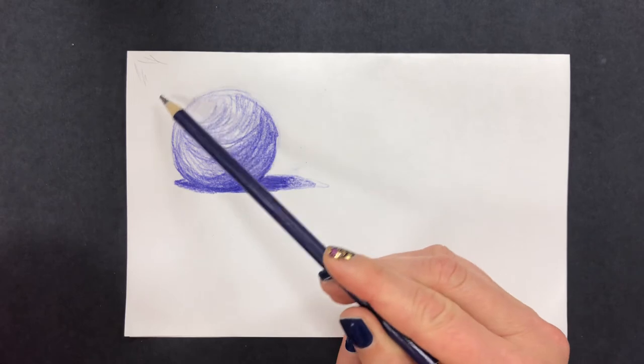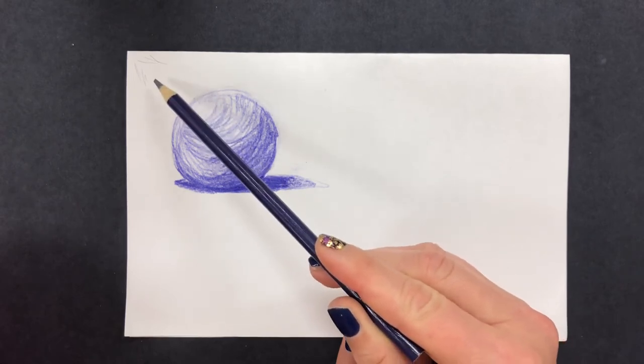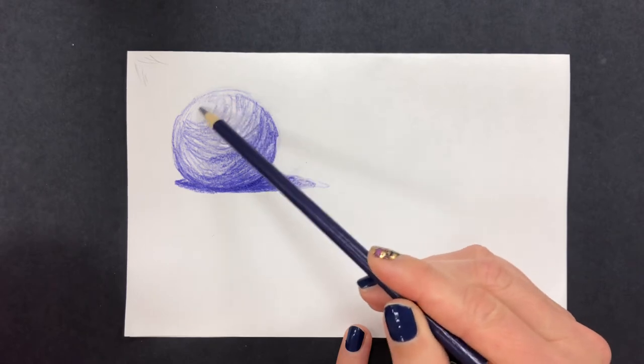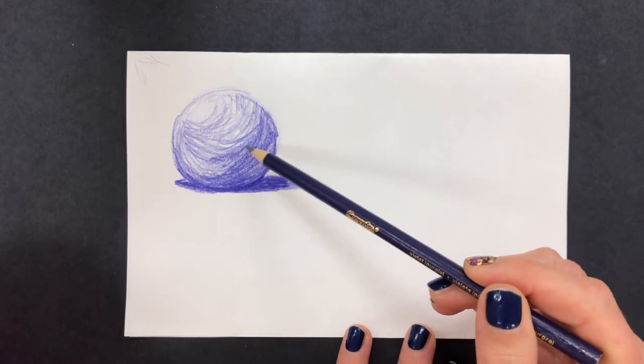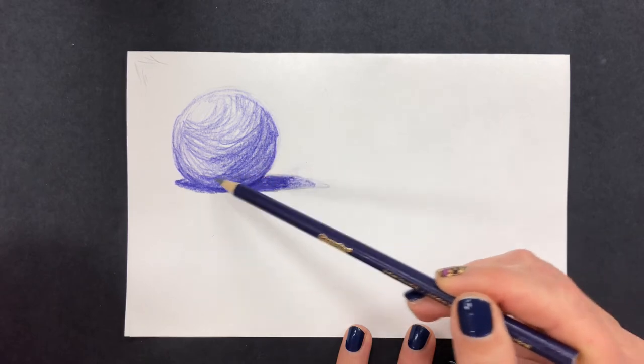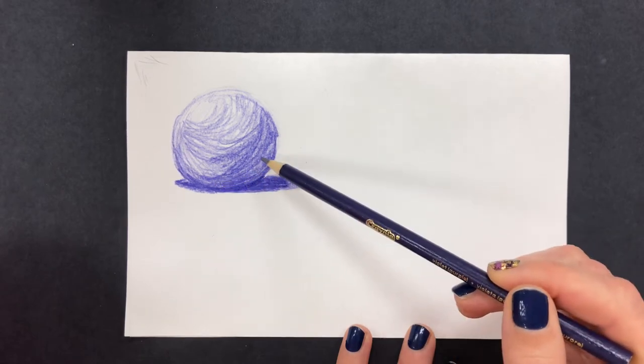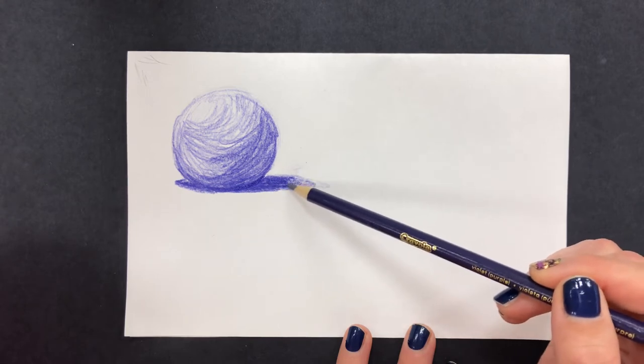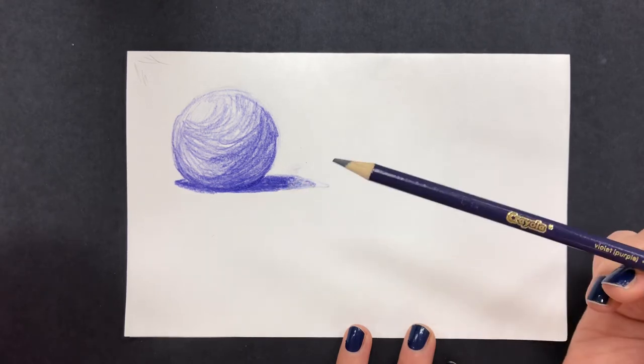So in this example the source of light is in this upper left-hand corner. It's shining down and hitting the highest point of the sphere and creating a highlight. There is some shadow on the sphere or circle itself and then there's a cast shadow which is the darkest value that we have. So let's go ahead and get started.